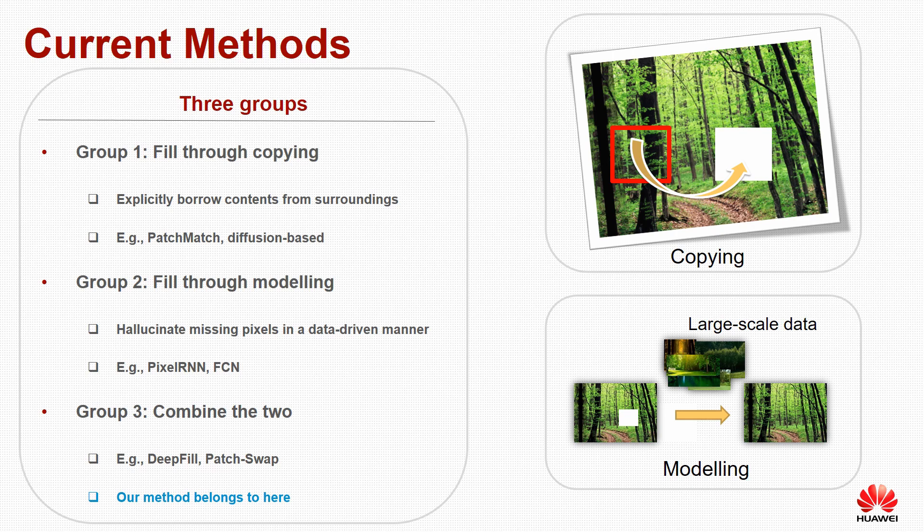The second group is fill-through-modeling. These methods typically train a model using large-scale datasets and try to model the distribution of image structures. During inference, they hallucinate missing pixels based on what they have learned. Examples include pixel RNN and fully convolutional networks. The third group combines the two, with examples including DeepFill and PatchNet.